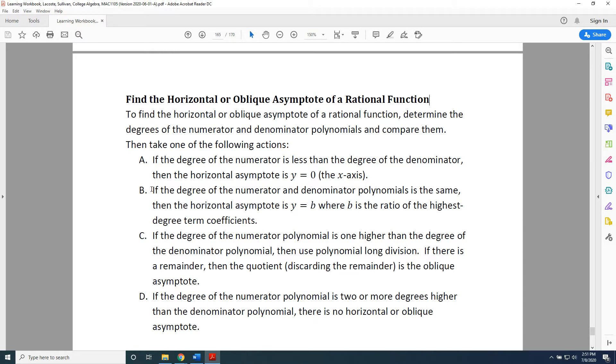Option B: If the degree of the numerator and denominator polynomials is the same, then the horizontal asymptote y equals b, where b is the ratio of the highest degree term coefficients.